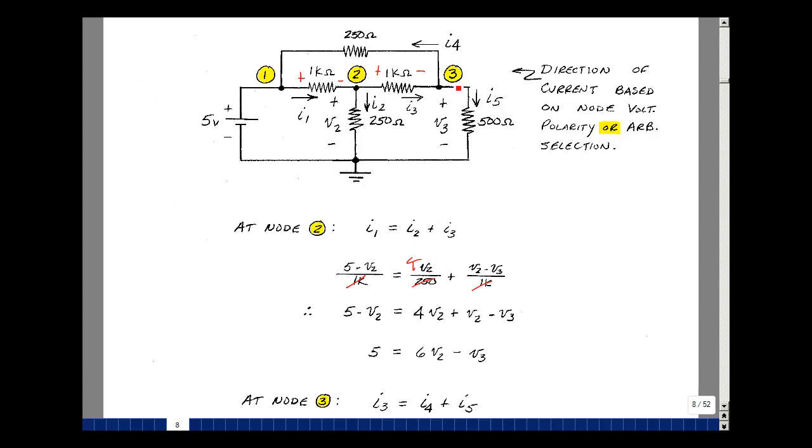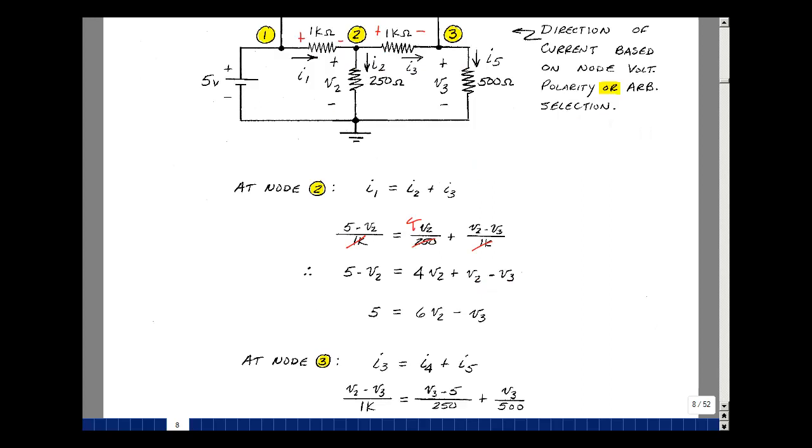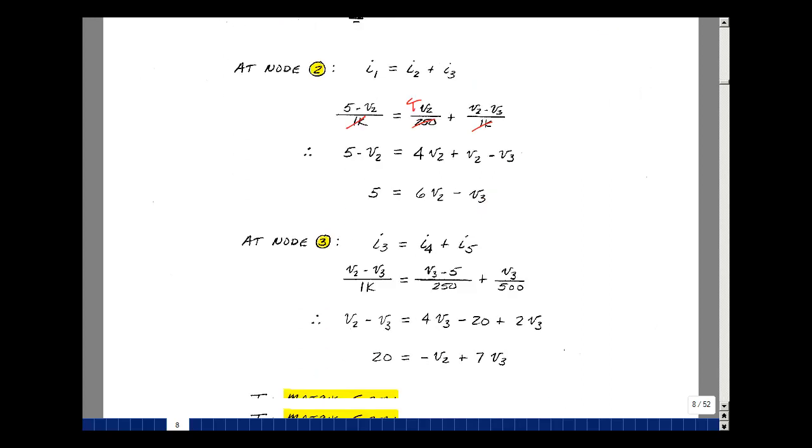Node 3, I3 is entering, I4 is leaving, and I5 is leaving. What's I3? Well, we just found that. That's V2 minus V3 divided by 1k. Current for I4, being in this direction, implies the voltage is this way with Ohm's Law. It's going to be V3 minus V1 divided by 250. And then lastly, the current in the 500 ohm resistor called I5 is going to be V3 divided by 500. And all this is shown here below. So I3 is equal to I4 plus I5.